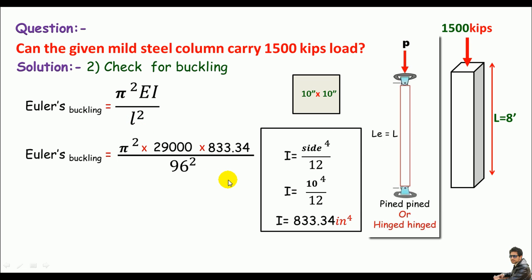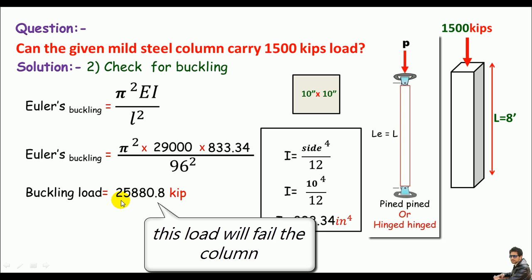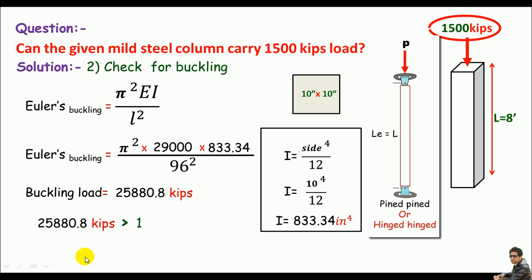Do some math with this equation, you can get the buckling load equals 2588.8 kips. You can clearly see the buckling load is greater than the applied load. It means the column is okay in buckling. So the column can carry 1500 kips so easily without any buckling or compression.